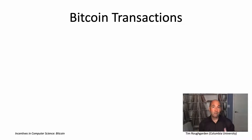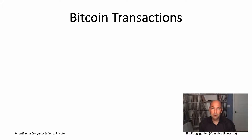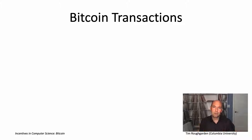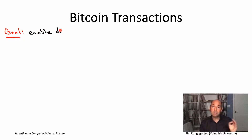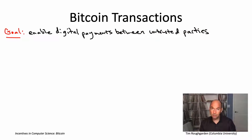You may have heard of some other cryptocurrencies as well, like maybe Ethereum. Much of what we'll say will also be relevant for those other cryptocurrencies. But let me just keep the discussion concrete, and let's just talk about the most famous of the cryptocurrencies, namely Bitcoin. So what is the point of Bitcoin? The point is to enable digital payments between parties who do not trust each other.